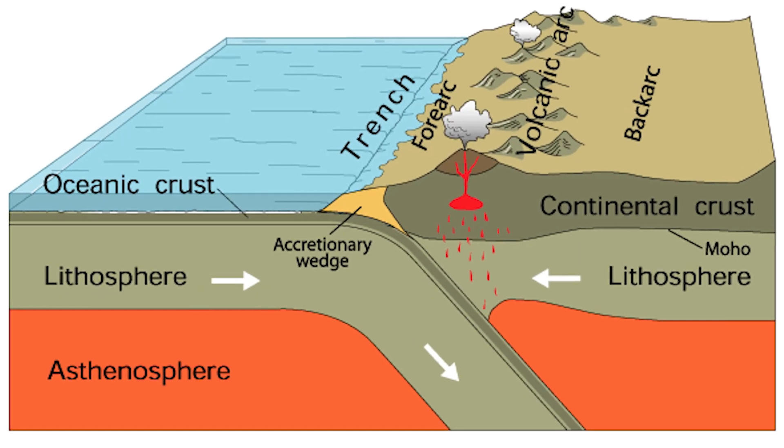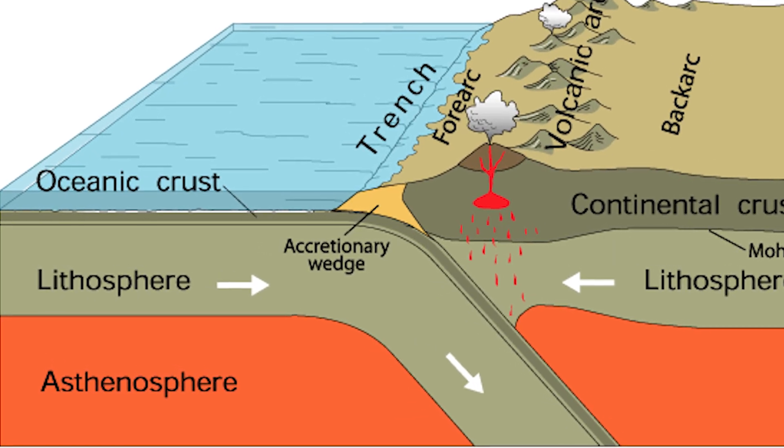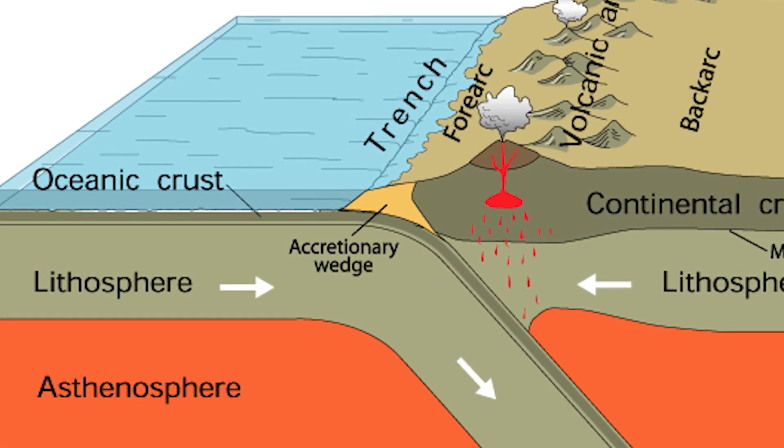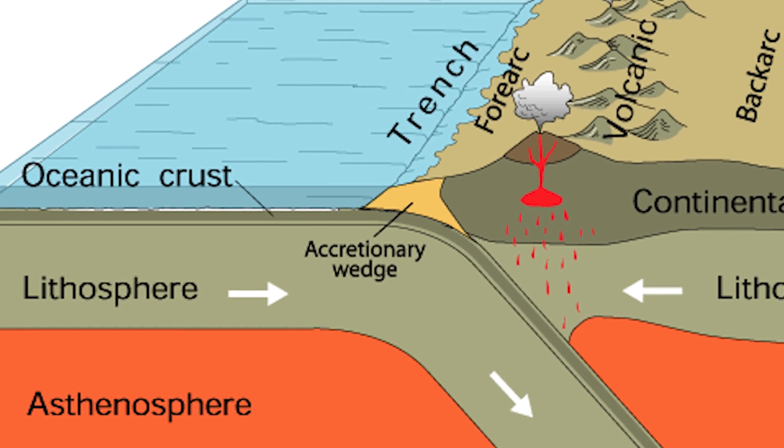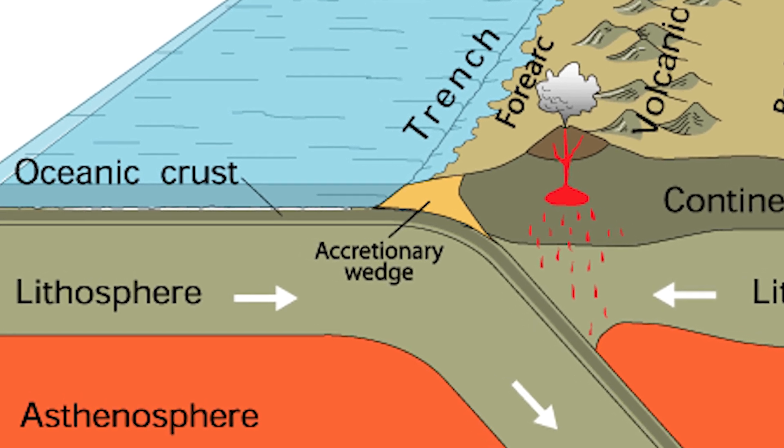Tsunamis from earthquakes are most generally caused in tectonic environments called subduction zones, where one plate is being driven down beneath another plate. We have our own homegrown subduction zone off of the states of Washington and Oregon, but even California can see the impacts of what we call far-field tsunamis — tsunamis coming, for example, from Japan.